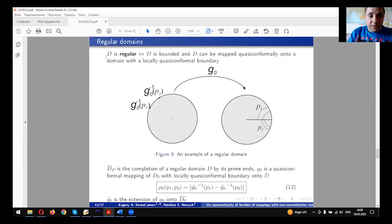We say that the domain D is regular if D is bounded and may be mapped quasi-conformally onto a domain with locally quasi-conformal boundary. For example, in the complex plane, any simply connected domain by the Riemann theorem is regular because there is a conformal Riemann mapping of the simply connected domain onto the unit disk.